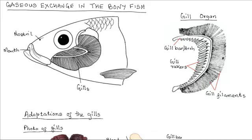Gases exchange in bony fish. Fish live in water and it is from this water that they obtain oxygen for respiration and release carbon dioxide. The breathing system of a bony fish such as tilapia consists mainly of the mouth, also known as the buccal cavity, gills, and the opercular cavity within which these gills are contained.